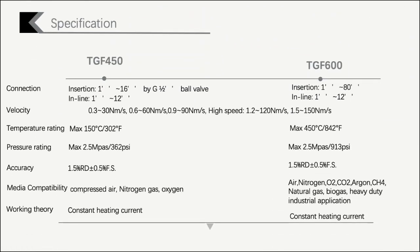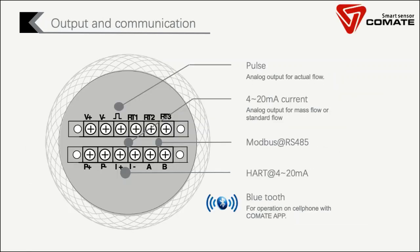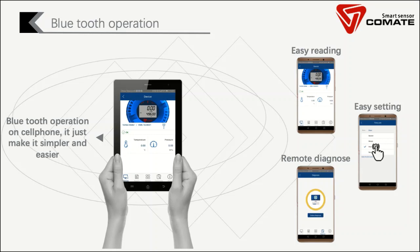Here are the detailed parameters for these two models. Regarding outputs, pulse, 4-20mA, and fieldbus options are all supported based on requirements. A unique Bluetooth feature enables operation on a cell phone via the COMED app. COMED is the first to bring Bluetooth technology into flow meters and make it work in real applications. Users can more easily access flow meter readings or settings — such as changing units or flow rate — through a cell phone or tablet, rather than going through menus repeatedly. Most importantly, a remote diagnosis function allows COMED engineers to check parameters and flow signals remotely, helping to analyze issues that happen on site.